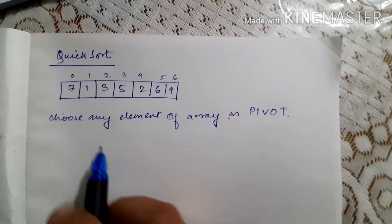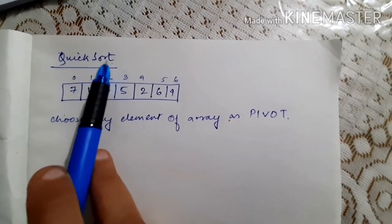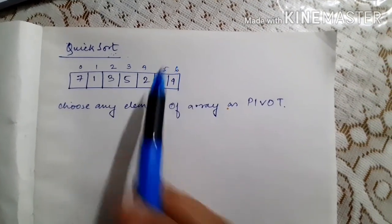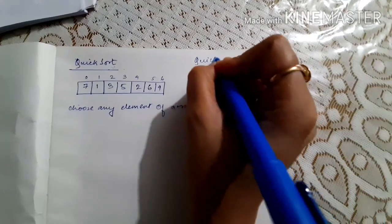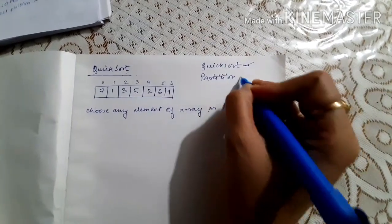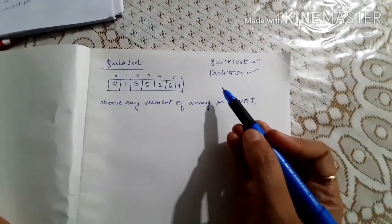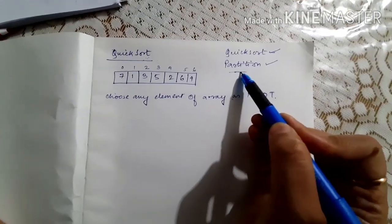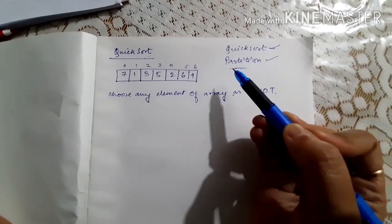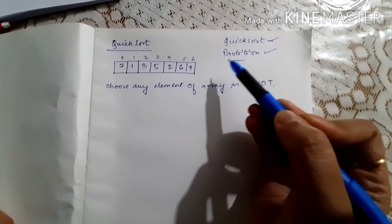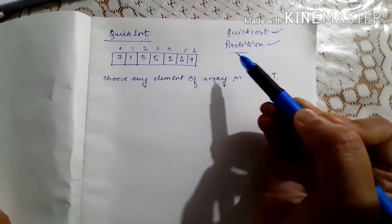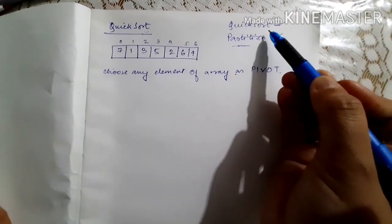Quick sort algorithm comprises of two sections: one is the quick sort section and another is the partition section. We will apply this partition algorithm on the array over and over again such that at the end only one element is left. Since we know that a single element is already sorted, we combine these single elements and arrive at the sorted array.